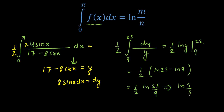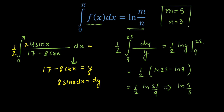Comparing with the given form ln(m/n), we got the value in the form of a logarithm, so we can easily compare. The value of m is equal to 5 and the value of n is equal to 3. That is our final answer, and that will be all.